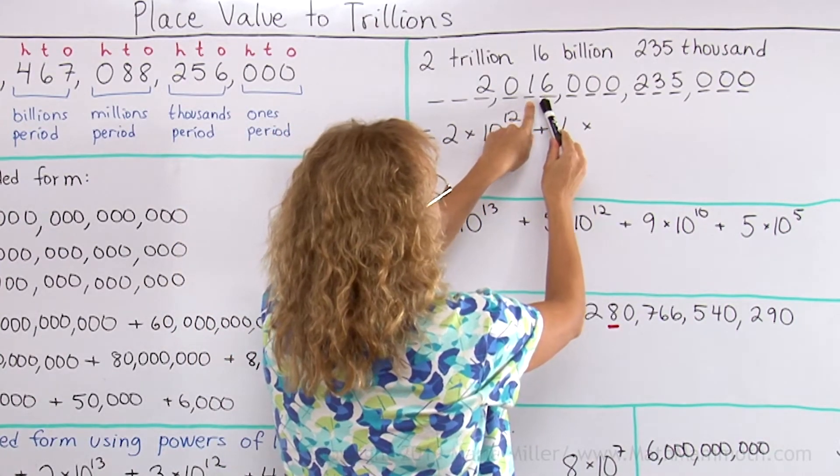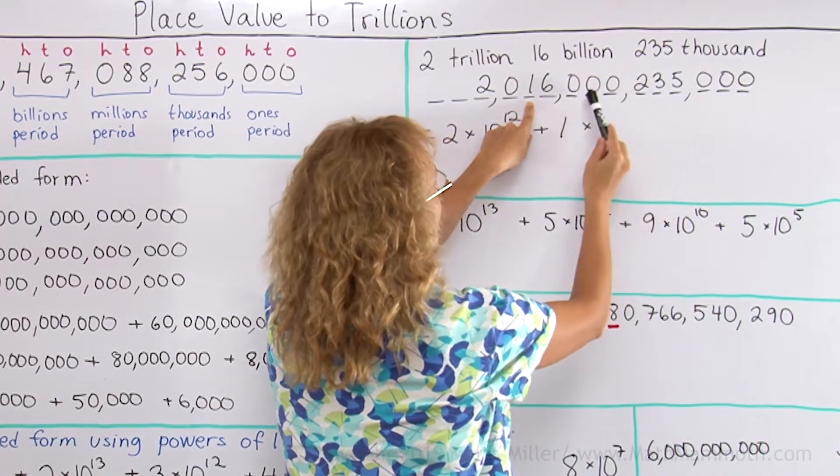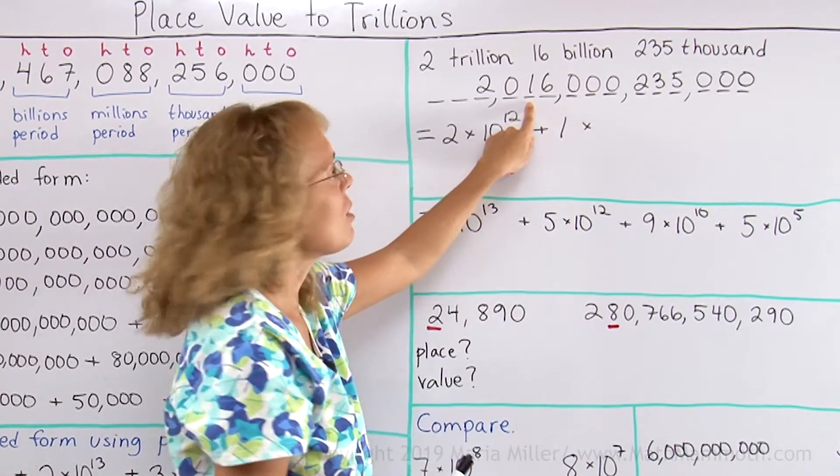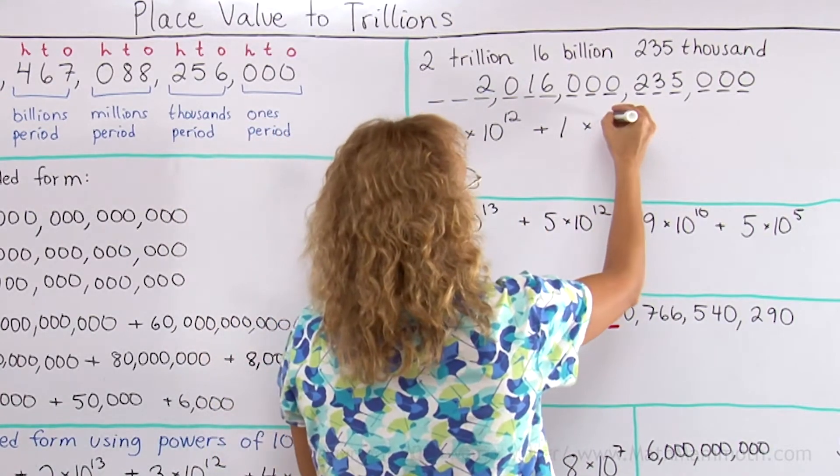then after this would be zeros. How many? 3, 6, 9, plus this one here—that would be 10 zeros. Okay? So it is 10 to the 10th power.